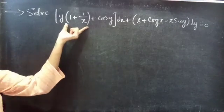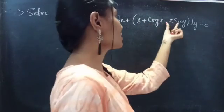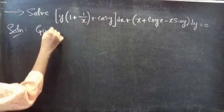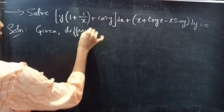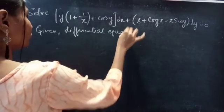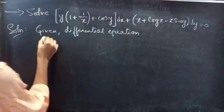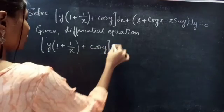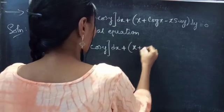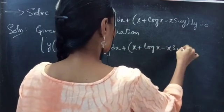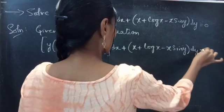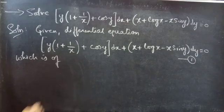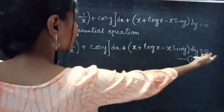Problem: Solve y times (1 plus 1 by x plus cos y) dx plus (x plus log x minus x sin y) dy equals to 0. Consider it as equation 1, which is of M dx plus N dy equals to 0 form.